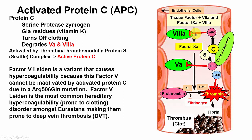Activated protein C is a protease, much like thrombin, that cleaves and inactivates Factor 8a and Factor 5a. This slows the entire clotting cascade — it is a feedback inhibition process to slow clotting.